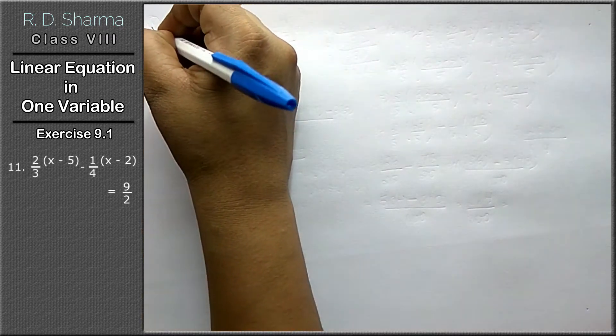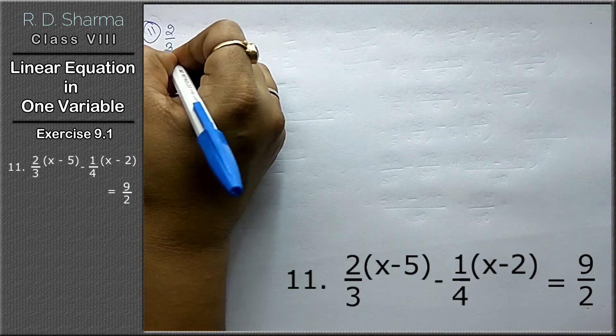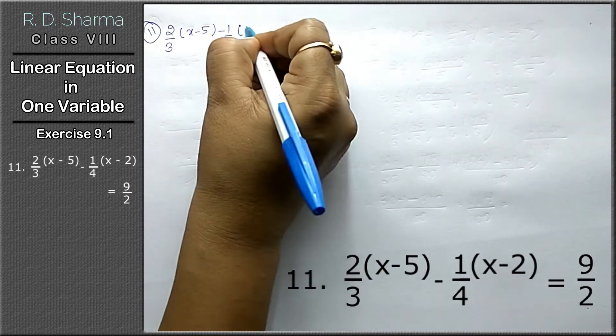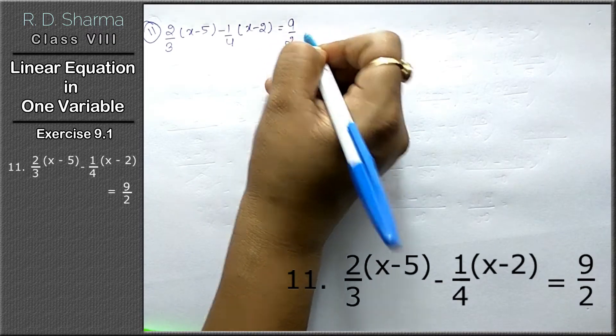The question is 2 upon 3 (x minus 5) minus 1 upon 4 (x minus 2) equals to 9 upon 2.